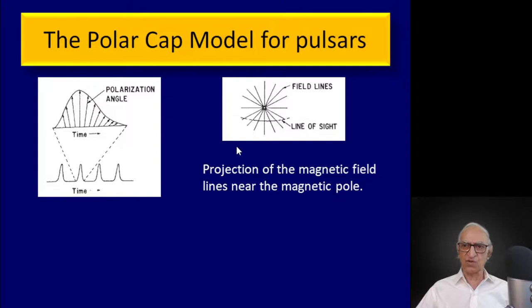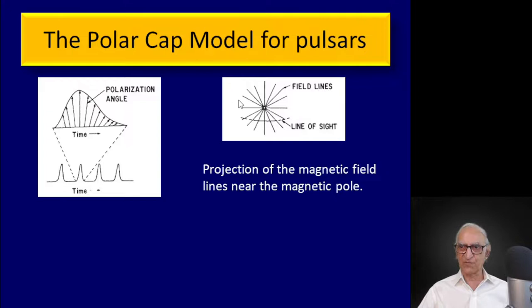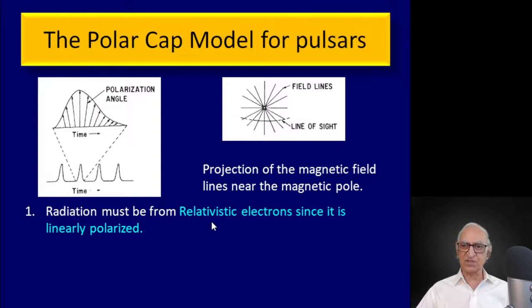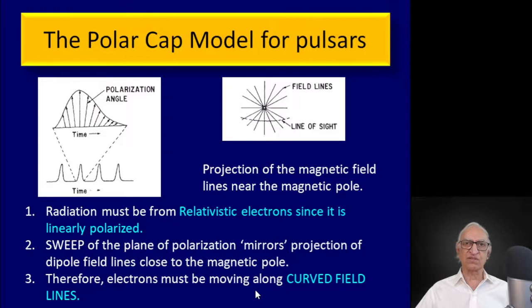They also deduced that the radiation will be in a hollow cone, and that it is highly linearly polarized — all these deductions from the simple observation of the sweep of the polarization vector within the pulse. The point is that what you see is the projection of the magnetic field lines. These field lines are actually curved, coming out of the screen in different directions like the spokes of an umbrella, but seen in projection they give this pattern. Therefore, as your line of sight cuts across them, at each instant of time the radiation is linearly polarized parallel to that field line.